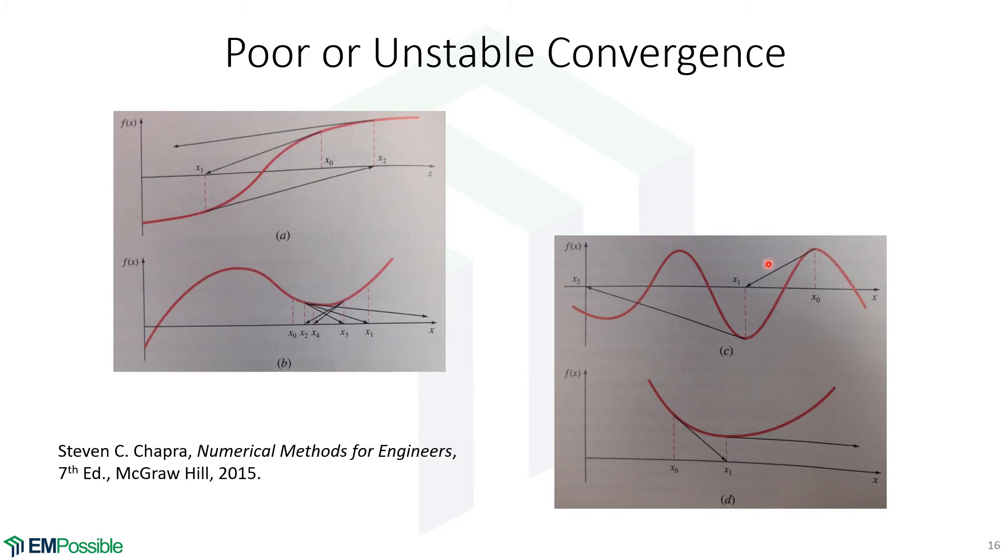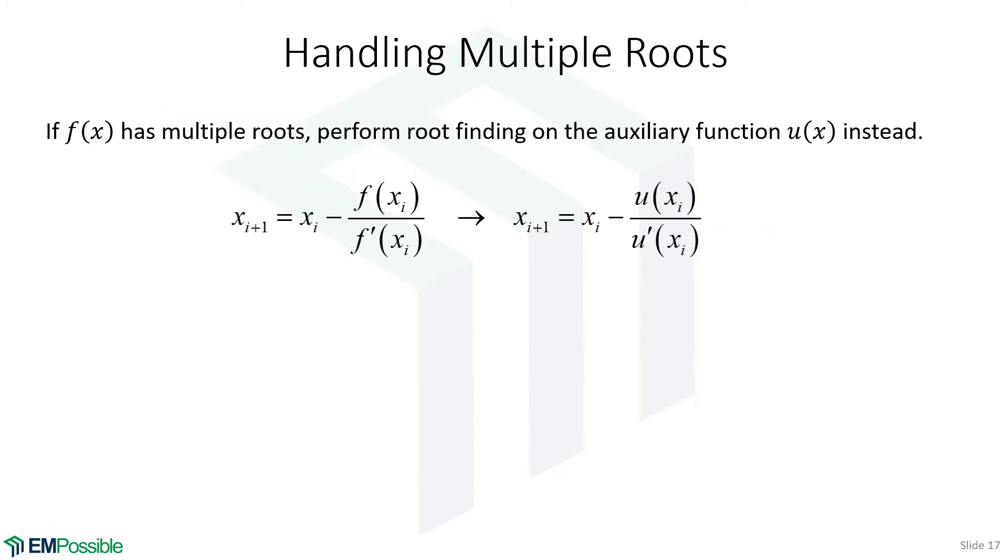If we have multiple roots, we could jump to the other side of a root and converge to the incorrect root. There's all kinds of things that can happen. Let's remind ourselves how to handle multiple roots for this method.